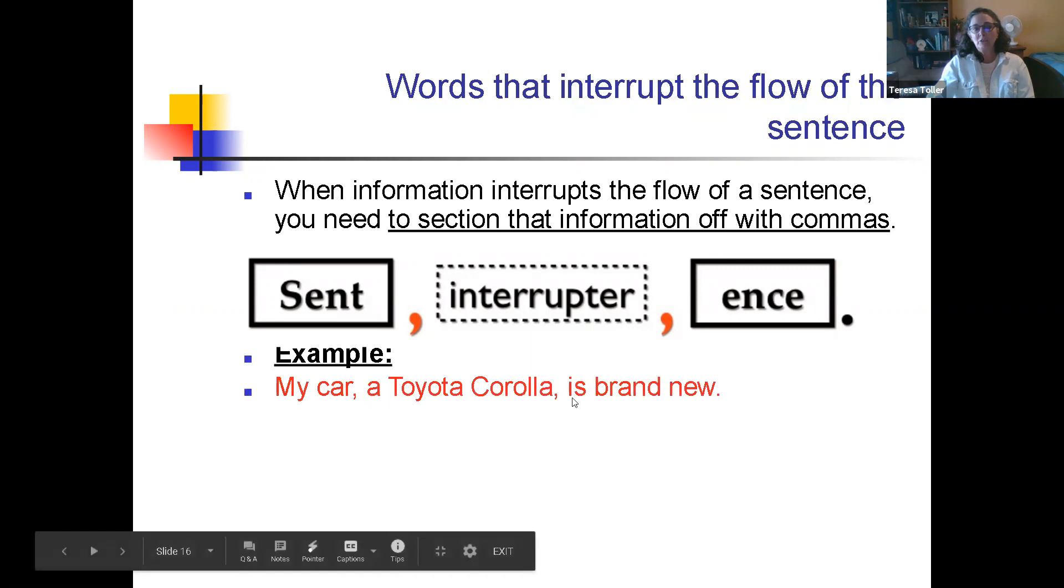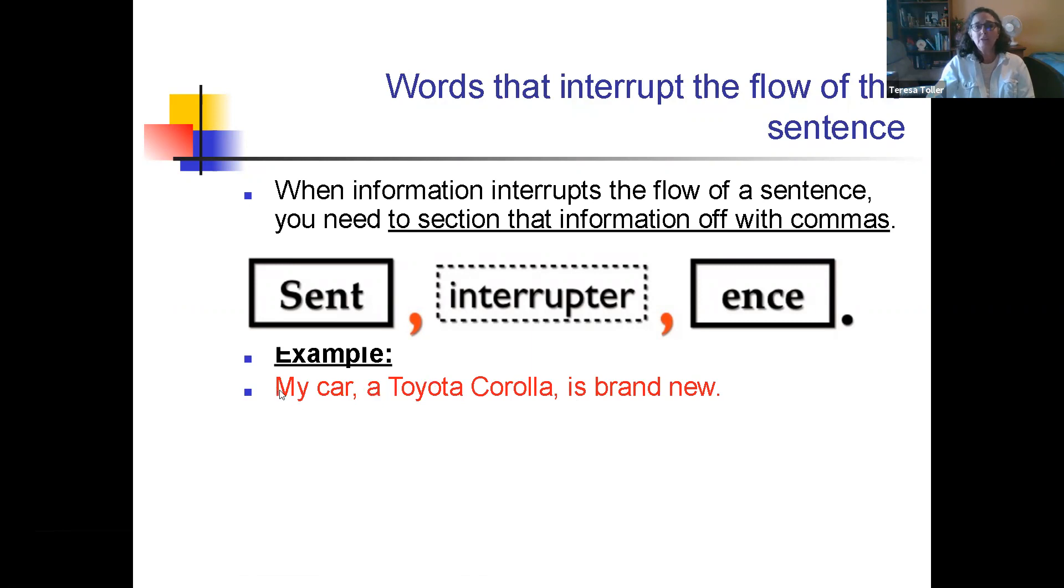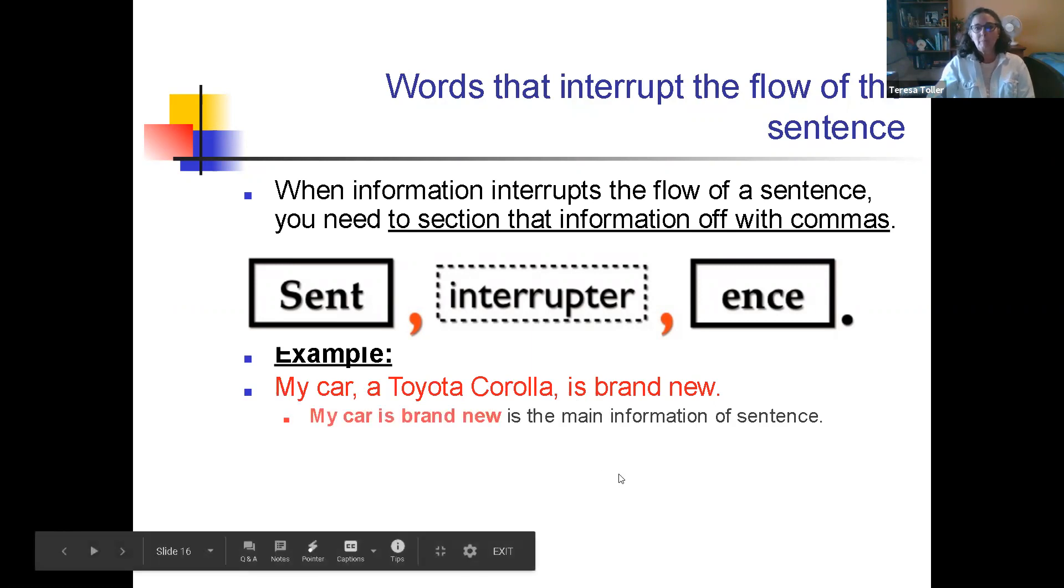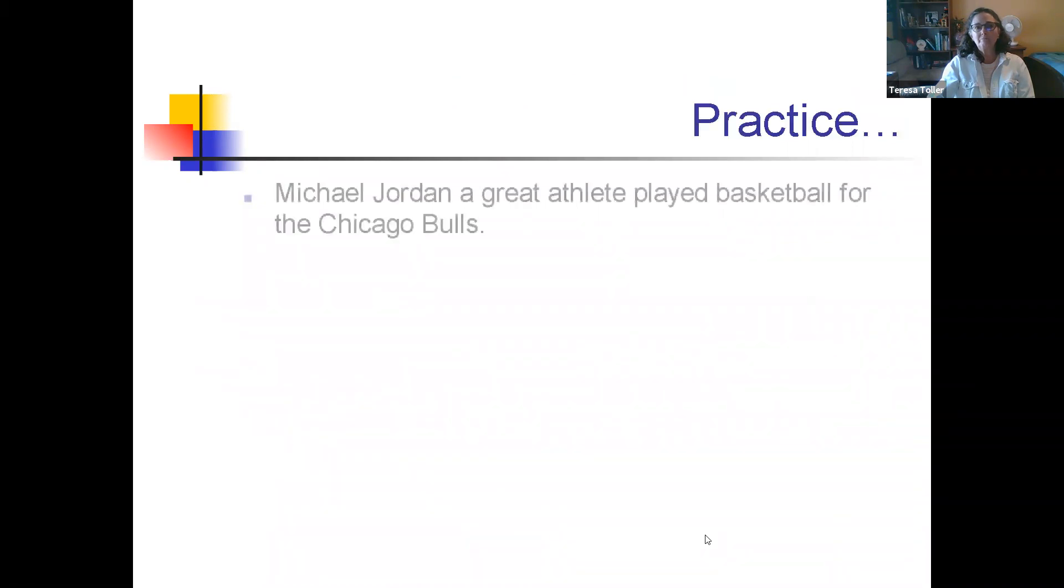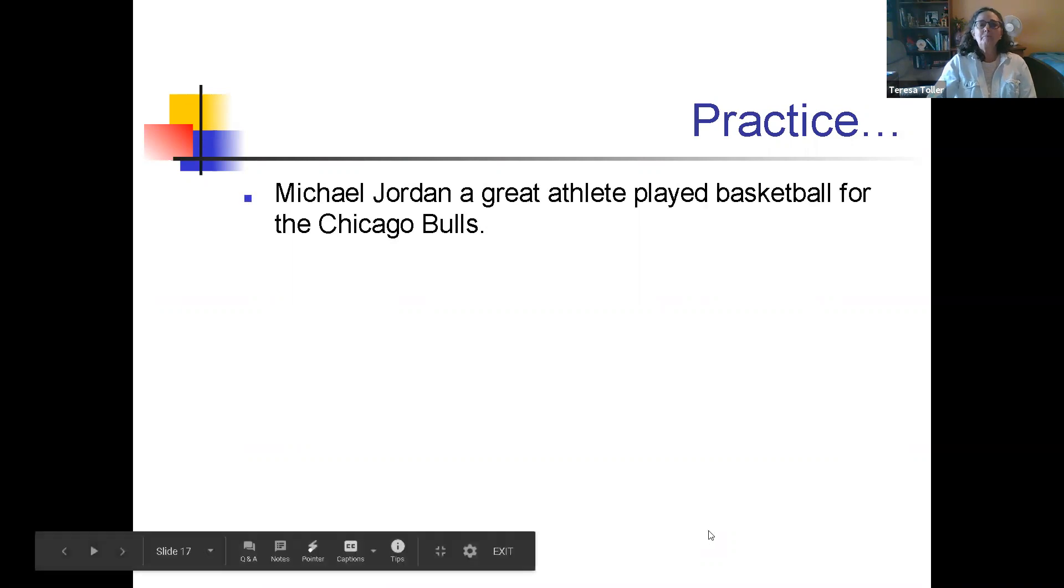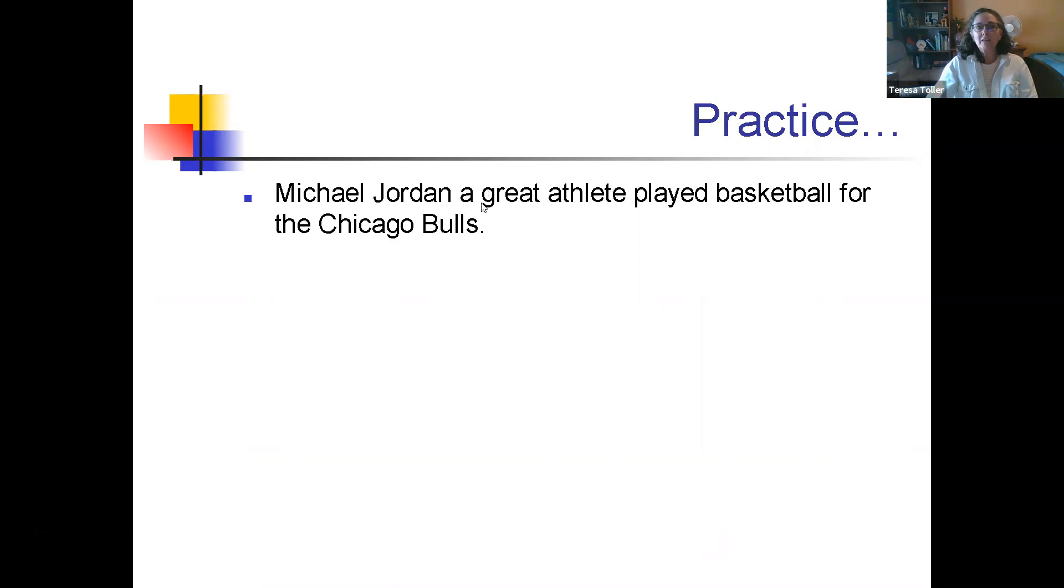My car, a Toyota Corolla—this is just additional information. I could say my car is brand new, but I wanted to tell everybody that it's a Toyota Corolla. Comma before the interrupter, comma at the end of the interrupter. A great athlete is the interrupter. So comma before and comma after. Michael Jordan, a great athlete, played basketball for the Chicago Jets.